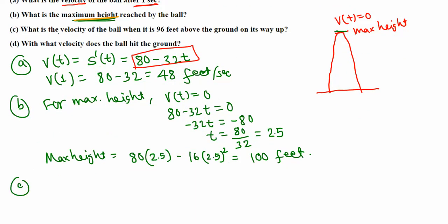In part C, we need to find the velocity of the ball when it is 96 feet above the ground on the way up. The maximum height is 100 feet, so the ball passes through 96 feet twice — once on the way up and once on the way down. We need to find the time when the ball is at 96 feet, then plug that time into the velocity function 80 minus 32t.